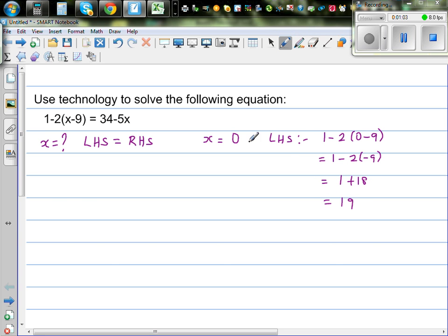So when x is 0, your left hand side is 19. And what's your right hand side? Your right hand side is 34 minus 5 times 0, which is going to be 34. So x equals 0 is not right.